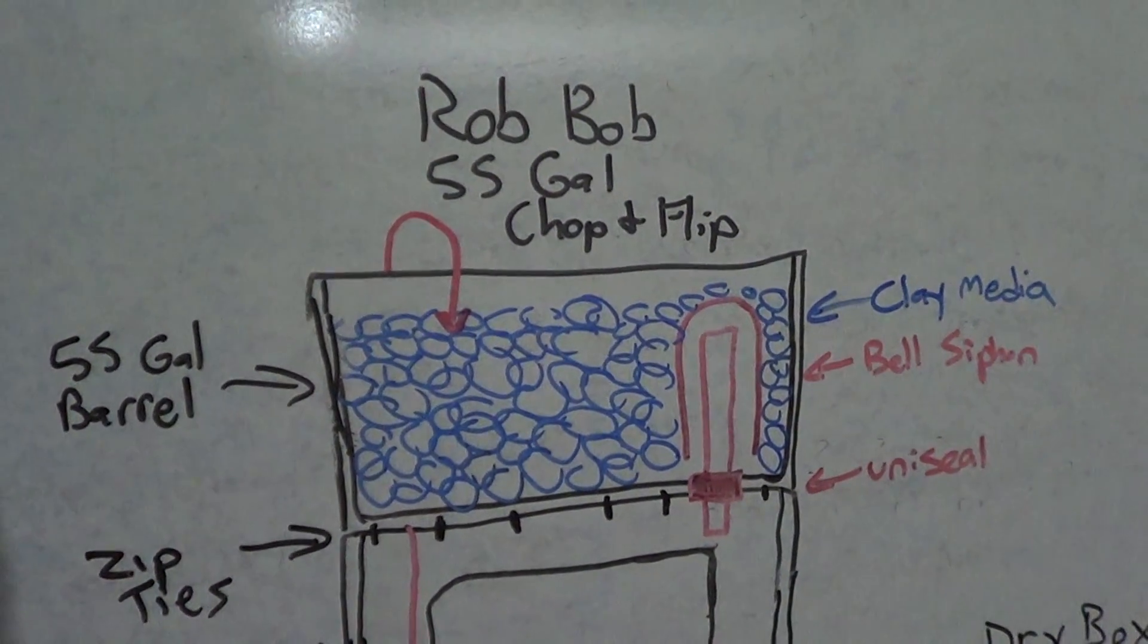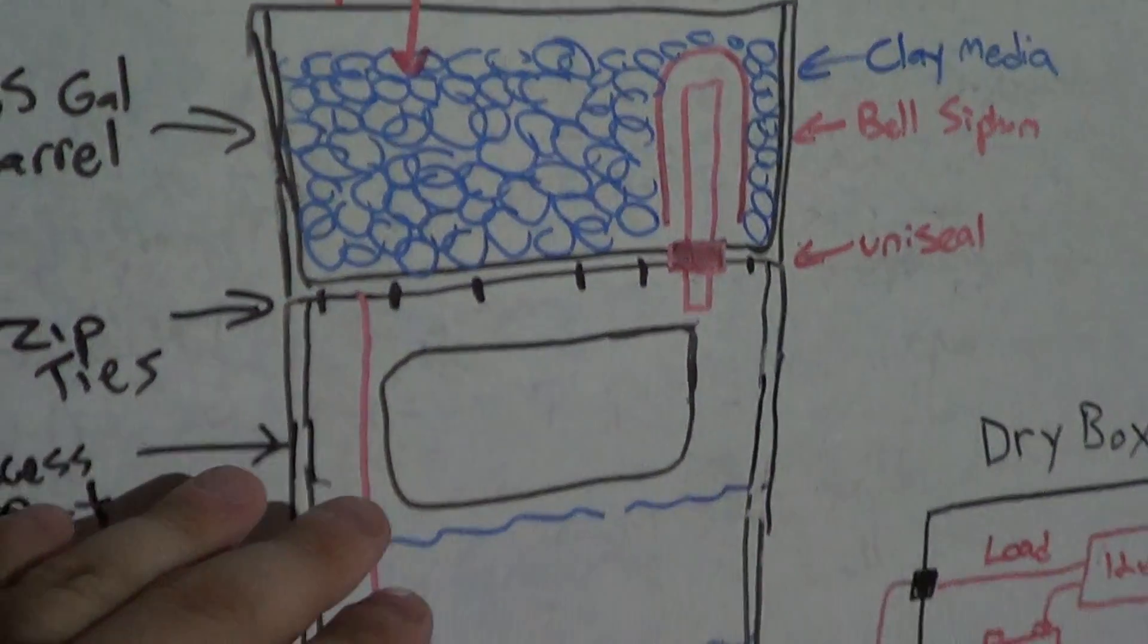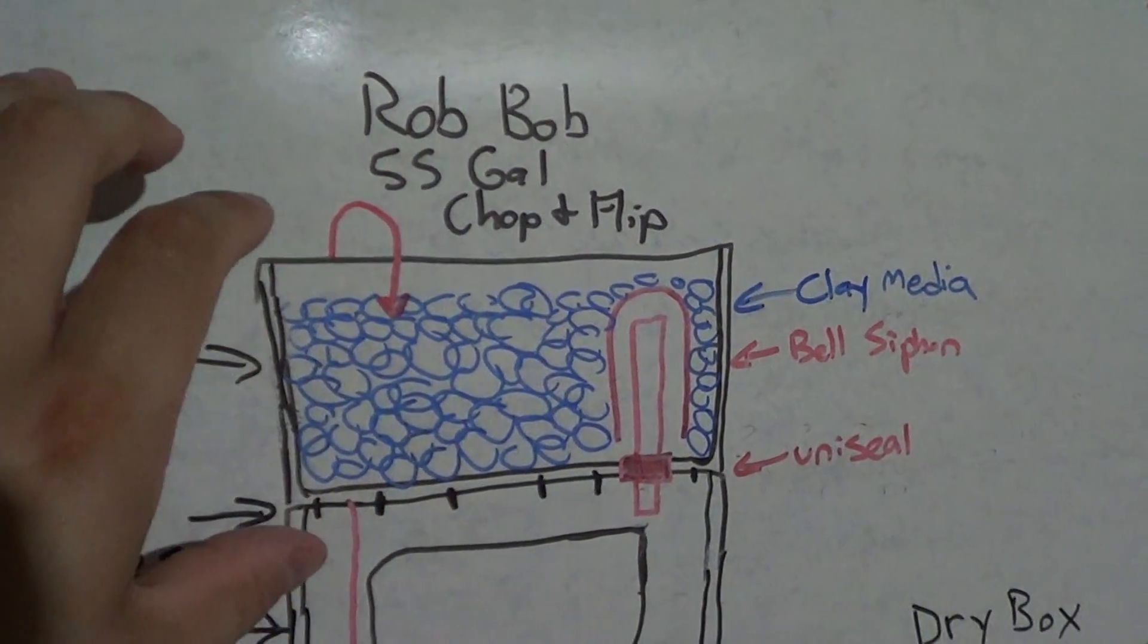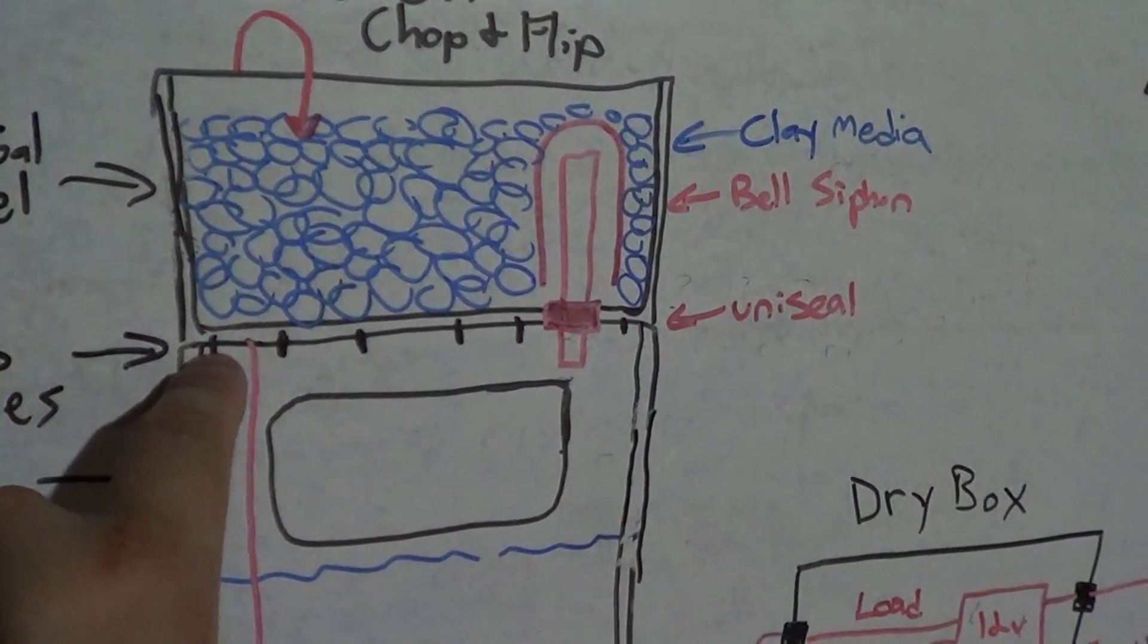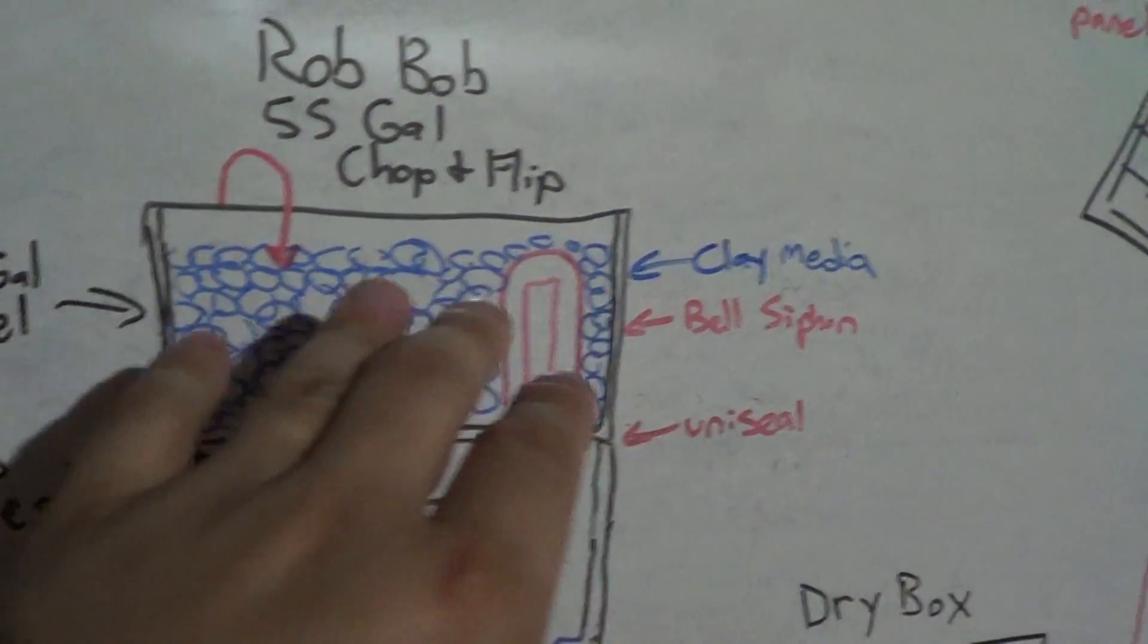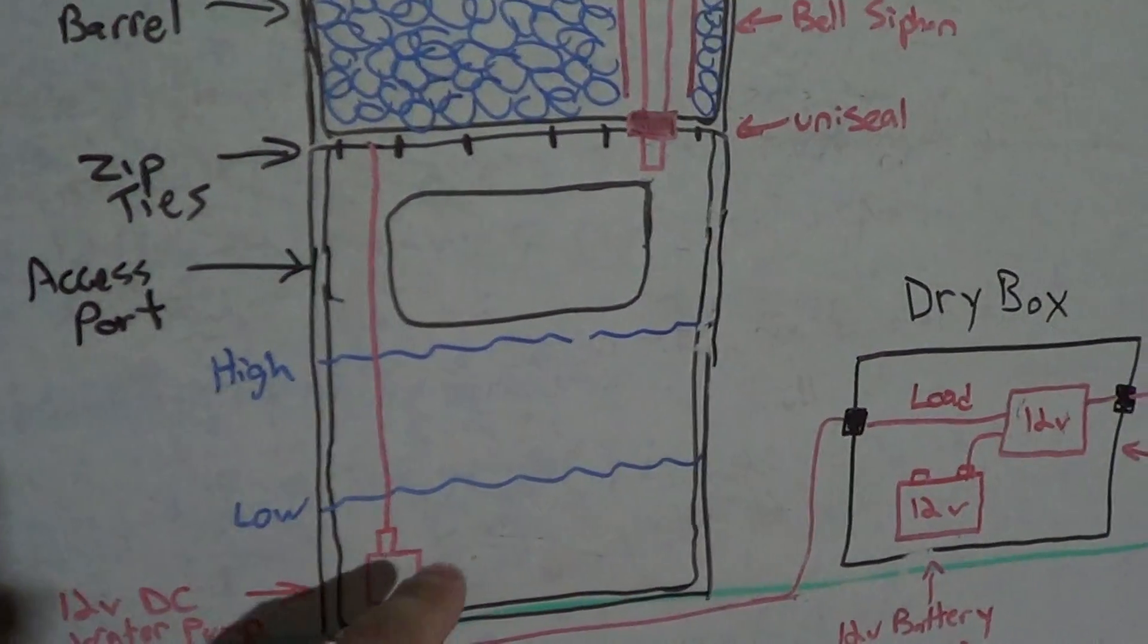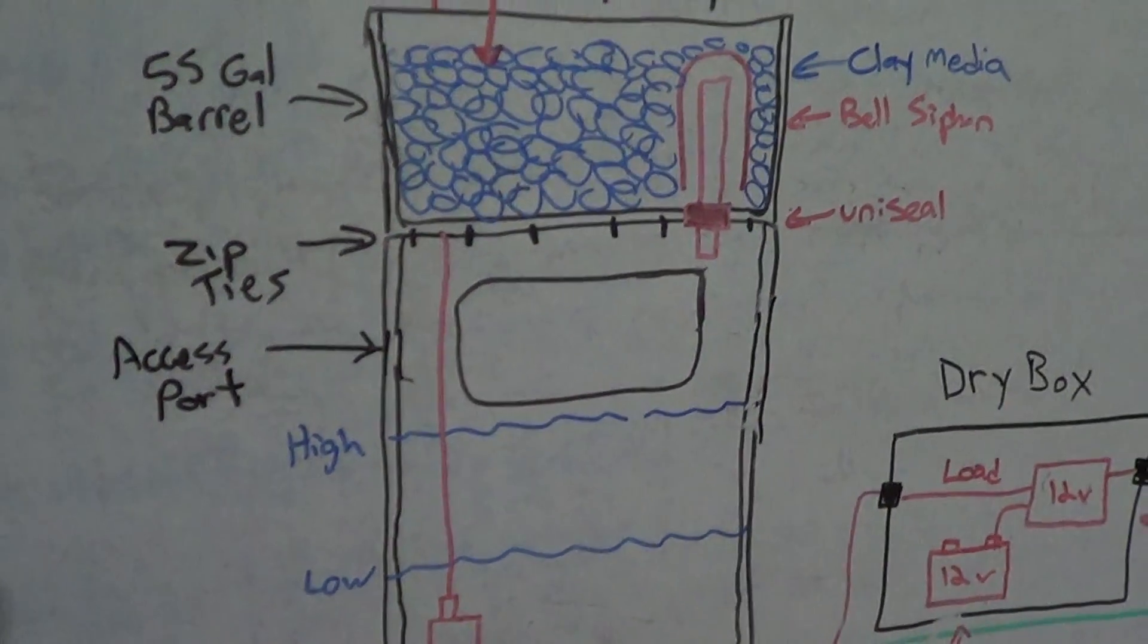He made a great video on how to construct one of these. Essentially what he does is he takes a 55 gallon drum and cuts about the top foot to 14 inches off of that barrel, then flips it over and puts it back on top of the same barrel. You can zip tie that top in place and once you've done that you've created your grow media chamber up top and your water chamber down below. The only way you're going to get into this chamber is if you cut an access port into the side of that barrel.